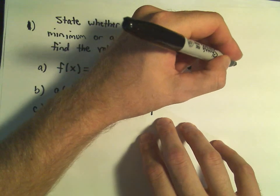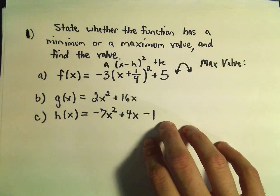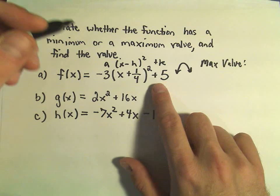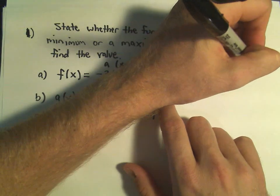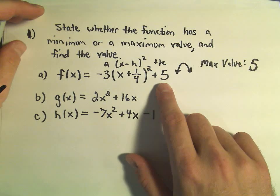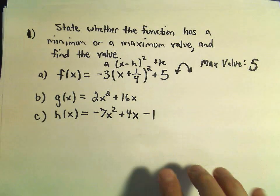and the maximum value is just the y-coordinate of the vertex, but the y-coordinate of the vertex is whatever number is hanging out, so in this case, just by knowing vertex form, I'll recognize that this has a maximum value of 5.